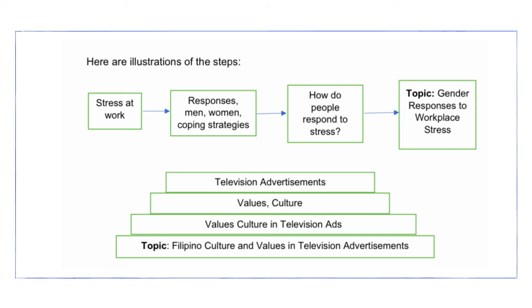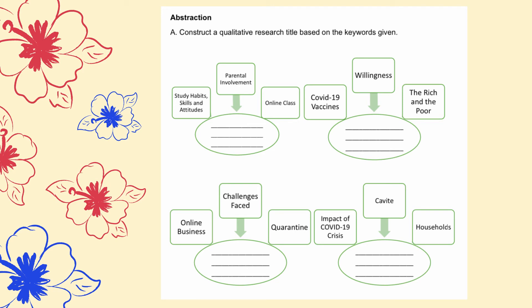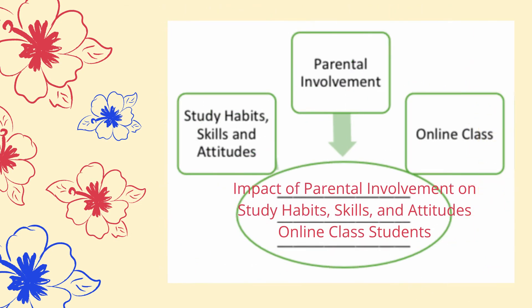Try constructing a qualitative research title based on the keywords given in the abstraction portion. For number one, we have the general topic: study habits, skills, and attitudes. The concept related to it is parental involvement and online class. My proposed research title for that item is: Impact of Parental Involvement on Study Habits, Skills, and Attitudes of Online Class Students. The word 'impact' was added because there is a relationship to be shown between parental involvement and how it affects study habits, skills, and attitudes. Online class refers not just to a concept but to the group of respondents — online class students specifically.